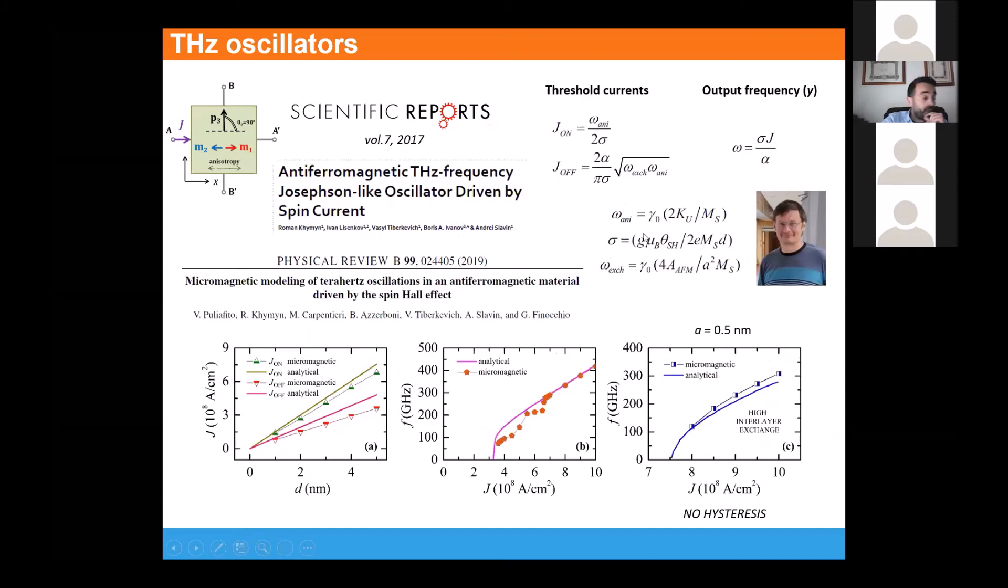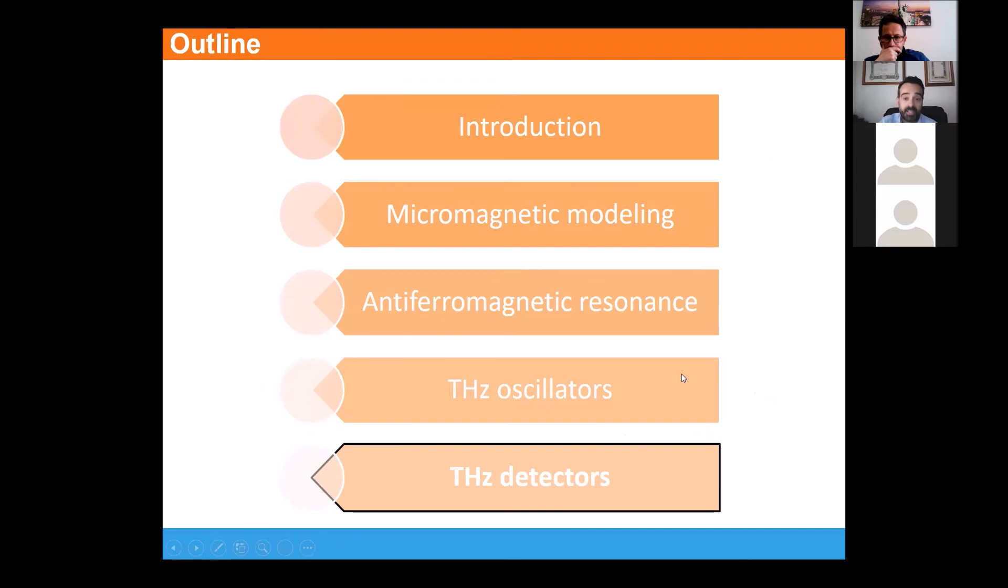Well, in this case, let me show that our numerical results were in agreement with the theoretical models, firstly presented in the paper by Roman and Professor Slavin, and then adapted to our configuration with the perpendicular spin Hall polarization with respect to the easy axis. I would skip the details of the model, but actually the results were in agreement with our numerical simulations. And finally, at last, we can see the detection of the terahertz.